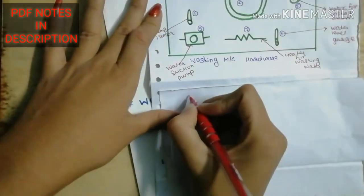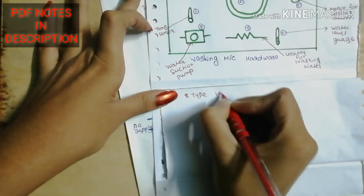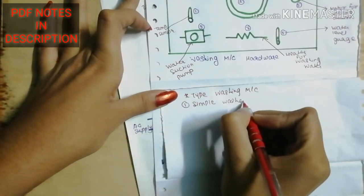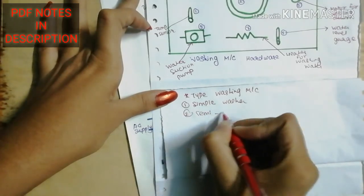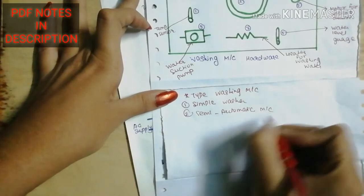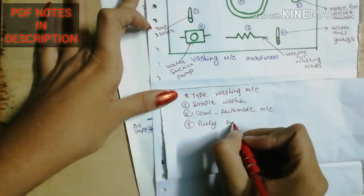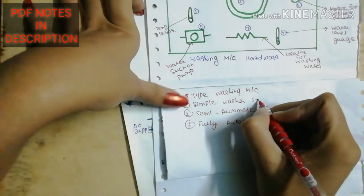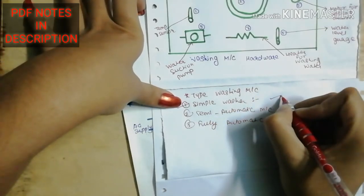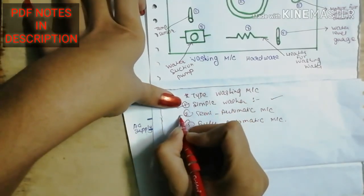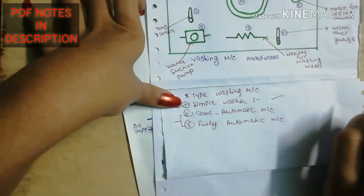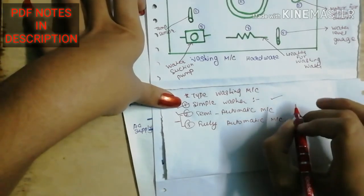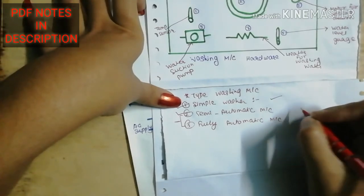Now let's see types of washing machines. First one is simple washer. Second one is semi-automatic machine, and third one is fully automatic machine. First one is simple washer. It can only do the washing, no dry. The cost is less compared to semi and fully automatic machines.